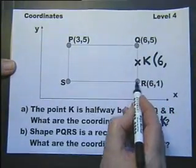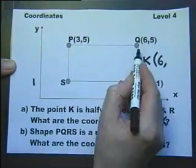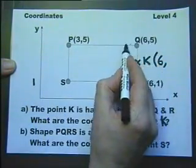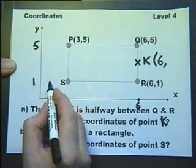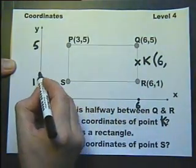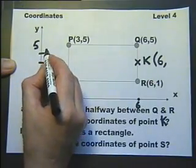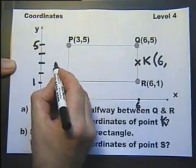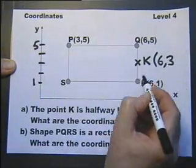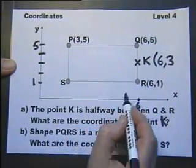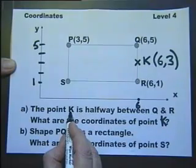This is the Y coordinate for R, and that's 1. This is the Y coordinate for Q, and that is 5. So that will be 1, 2, 3, 4, 5 — so that must be 3. So that's the coordinates of the point K.